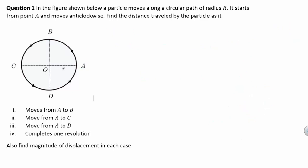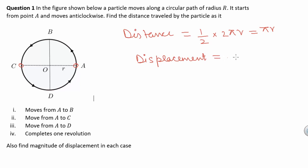In the second part of the question, we have to find the distance and magnitude of displacement when the particle moves from point A to point C. The distance travelled is equal to (1/2) × 2πr, because the distance from A to C is half the circumference of the circle. So distance travelled = πr. The magnitude of displacement between points A and C is equal to AC, which is the shortest possible distance between A and C. So AC = 2r.